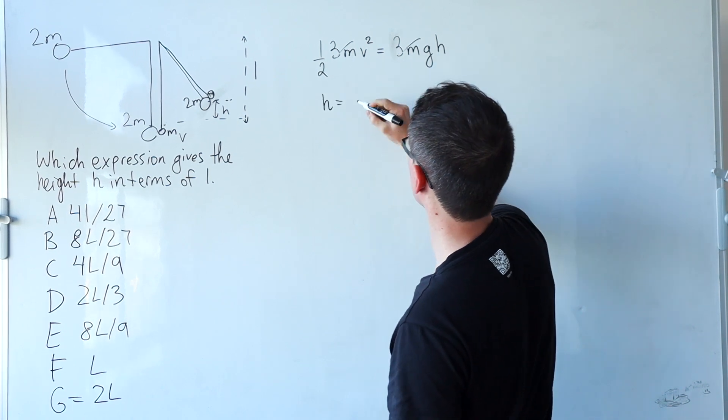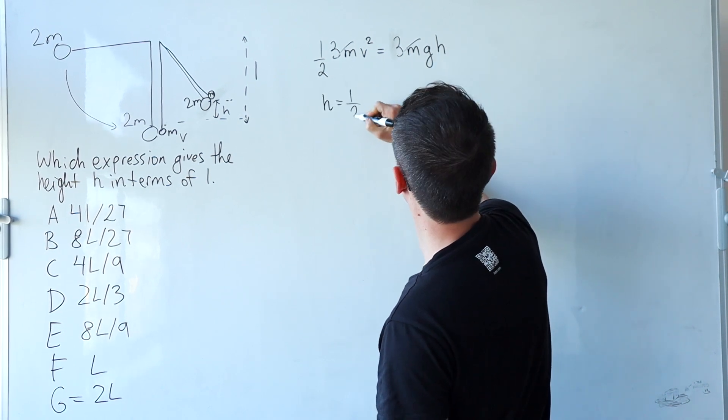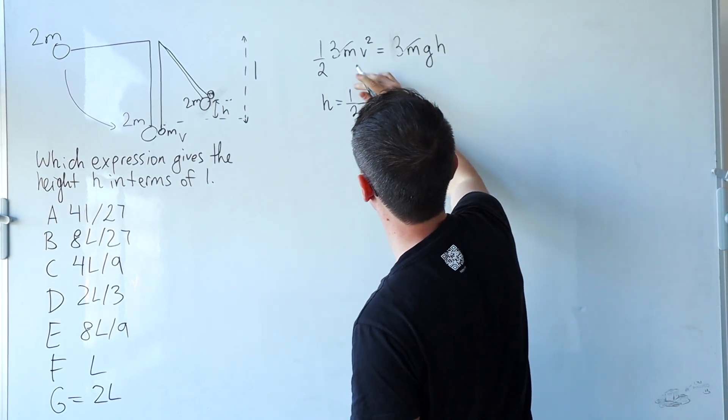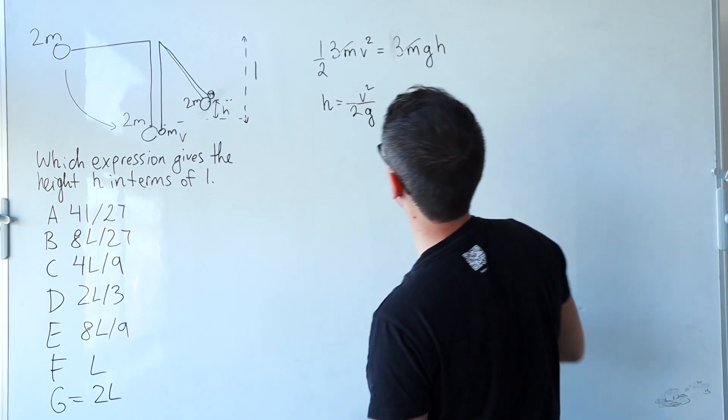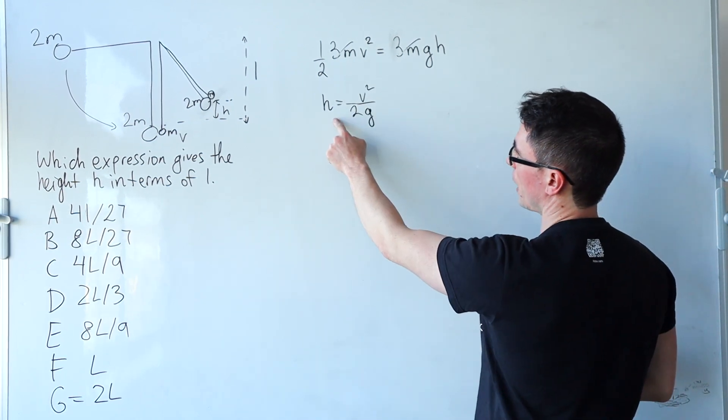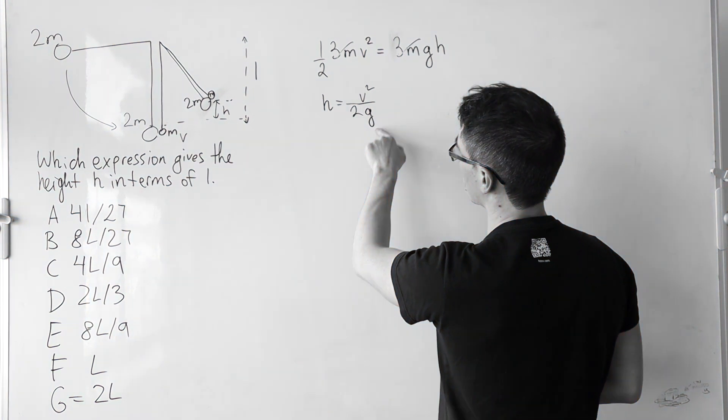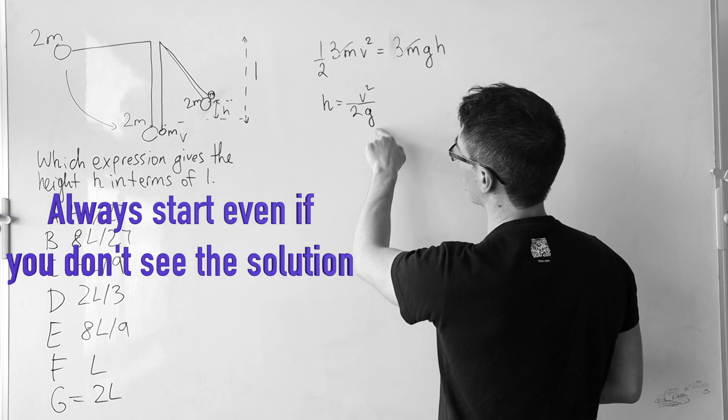So we can say that H will be a half. We have a factor of G here and then we have V squared here. So yeah, H is V squared over 2G. So right when I wrote this, I realized that this problem is relatively simple and all I needed to do is figure out the speed V. The lesson is always start working on the problem even if you don't see the solution immediately.